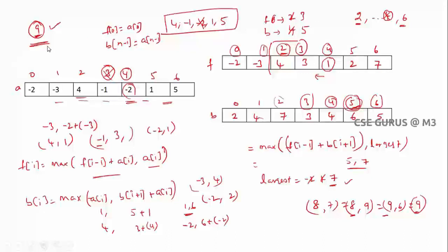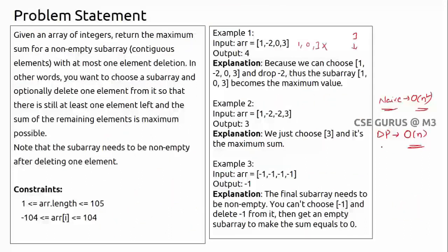We traverse each element only twice — once forward, once backward — so the time complexity is O(n). Two auxiliary arrays are required, giving a space complexity of O(n). This is the dynamic programming solution for Maximum Subarray Sum with at most one deletion.